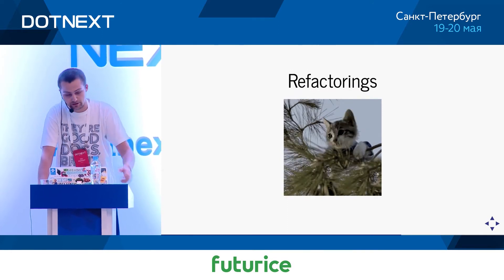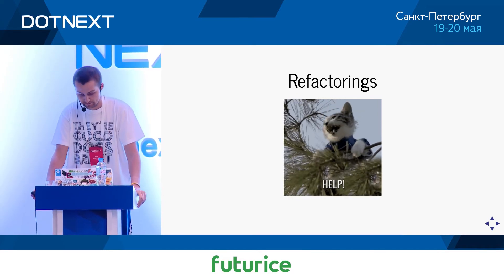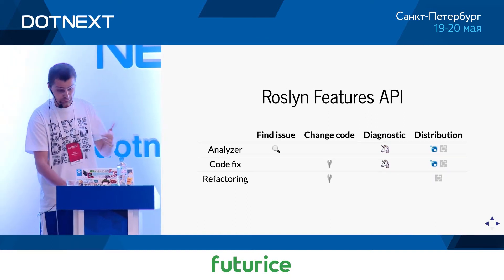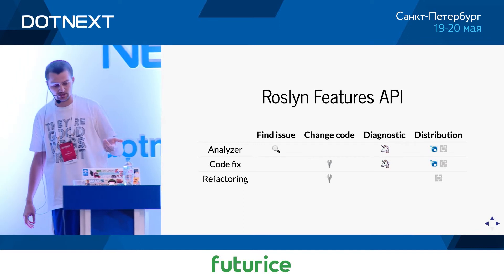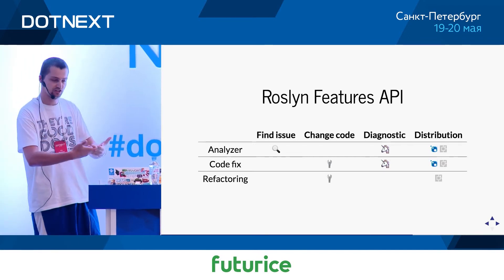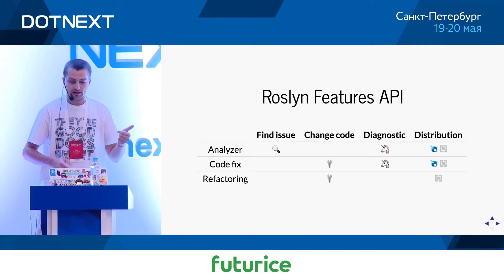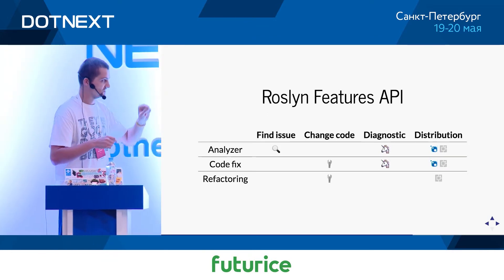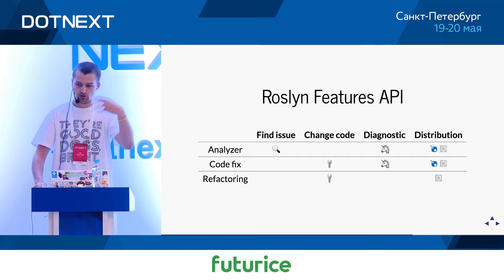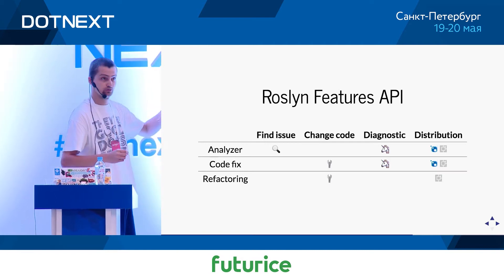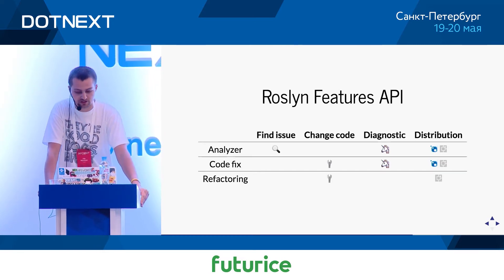A refactoring is like a cat stuck in a tree — as a developer you have to specifically ask for help; it's not going to be offered to you automatically. In summary: analyzers find a problem in the code but don't fix anything. Code fixes and refactorings don't find anything but have the capacity to introduce changes in scope of a document, project, or whole solution. Analyzers and code fixes can be packaged into a NuGet package and installed directly into the project, so whoever clones the project will have all the analysis rules regardless of what IDE extensions they have installed.